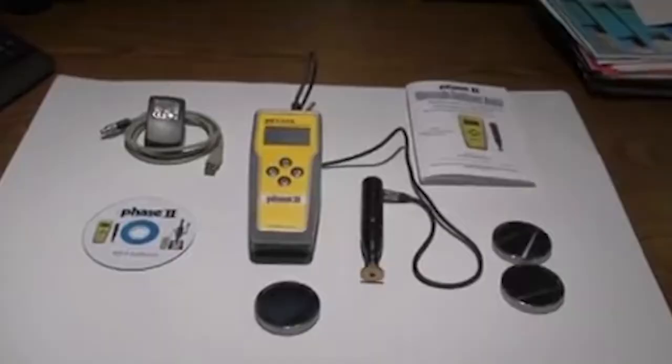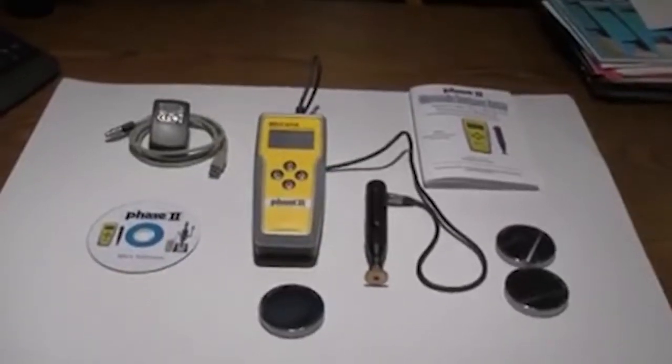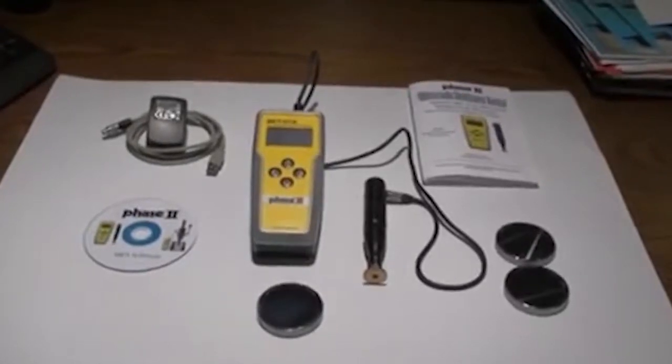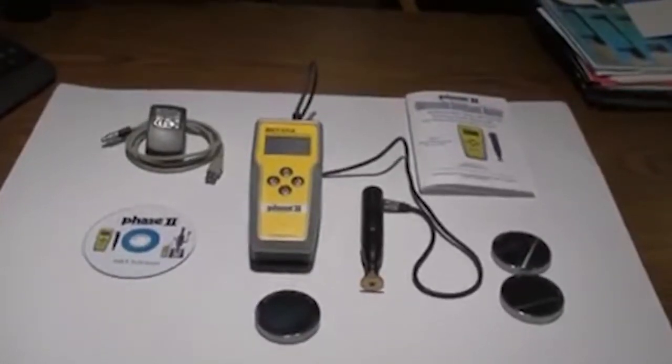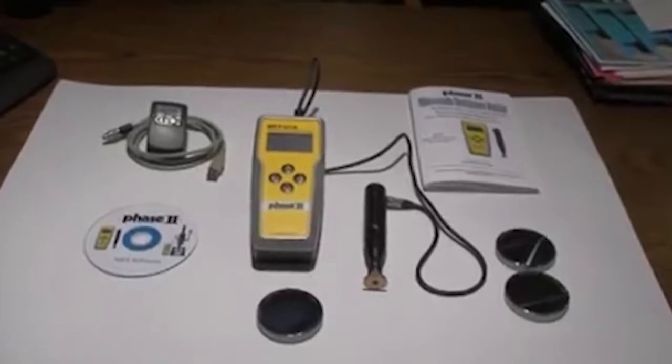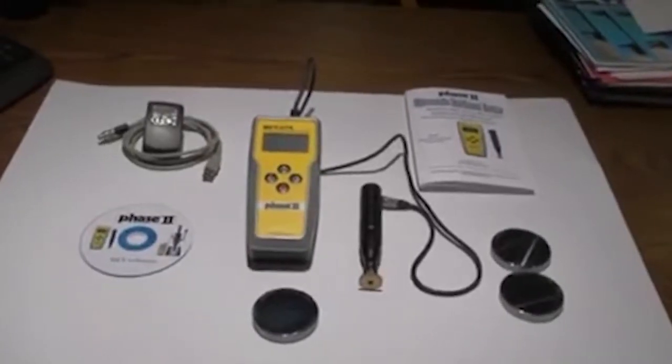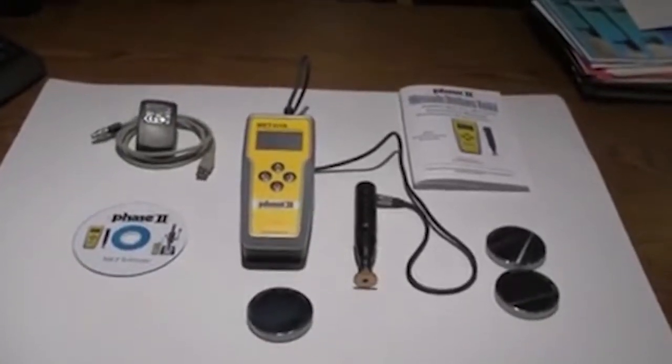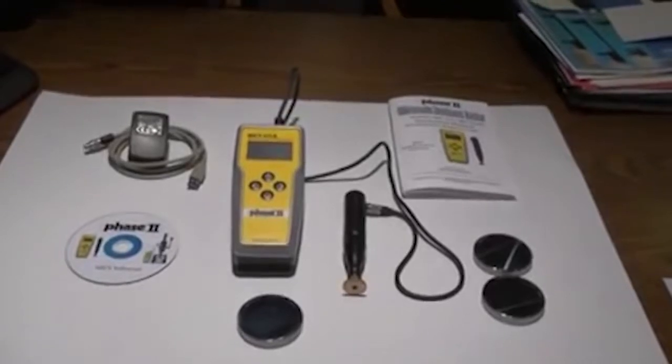This is an instructional video detailing the applications and functions of the Phase II MET ultrasonic portable hardness tester. The MET series portable hardness testers are designed to test metals, primarily steels, aluminum, and copper alloys.